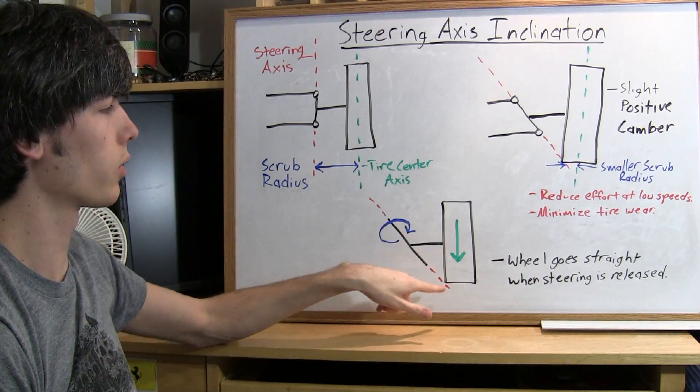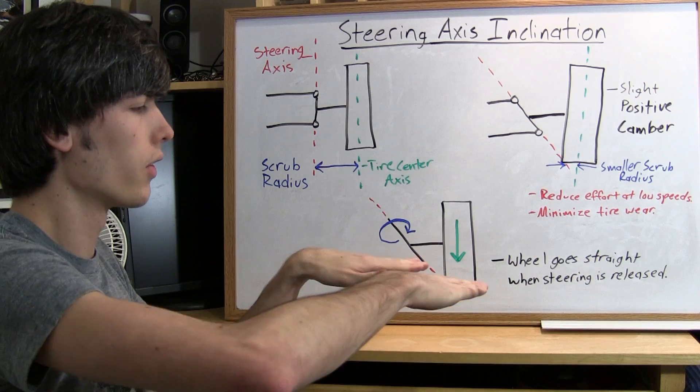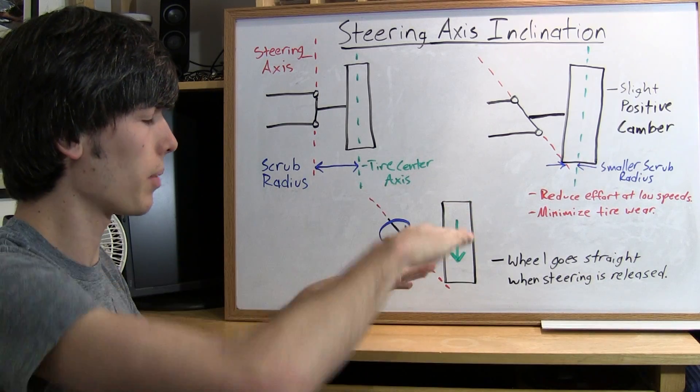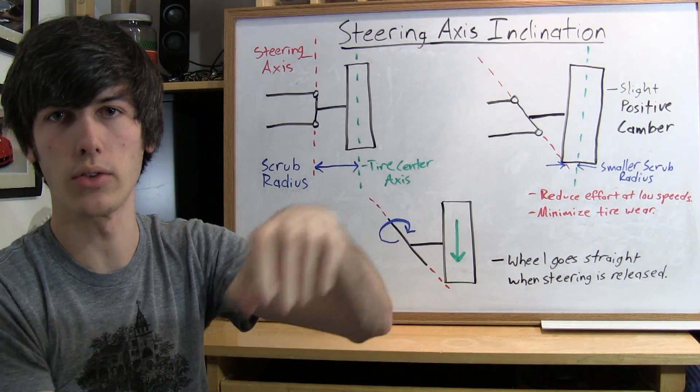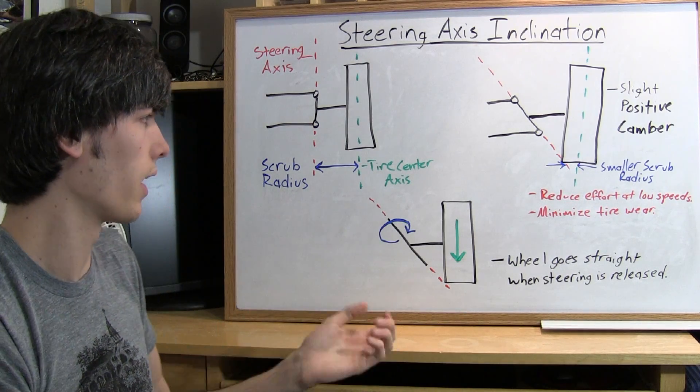Now when you force the tire to go downward obviously the ground's not going anywhere so your car might actually lift up a little bit and you can notice that if you're just sitting in a parking lot and you turn your tire all the way to the end of the lock.